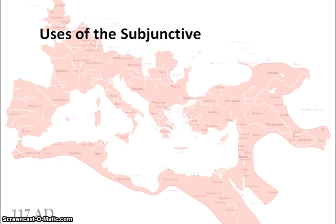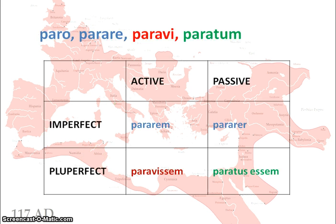So when you see a Latin subjunctive, the first question you should really ask is: why is this verb in the subjunctive — i.e. what use of the subjunctive is this? Looking back at formation: the imperfect subjunctive uses the first two principal parts, the pluperfect active uses the third principal part, and the pluperfect passive uses the fourth principal part — the supine or PPP.